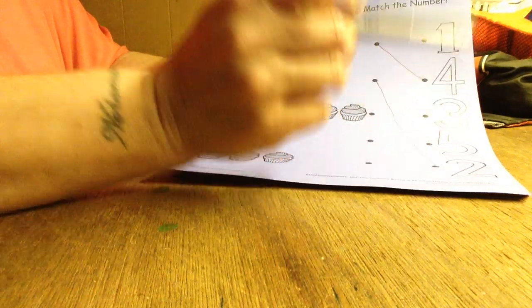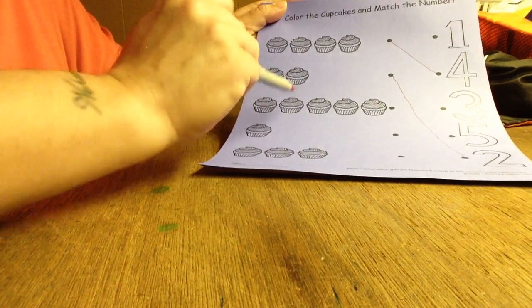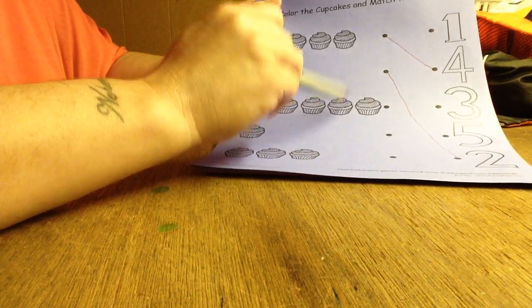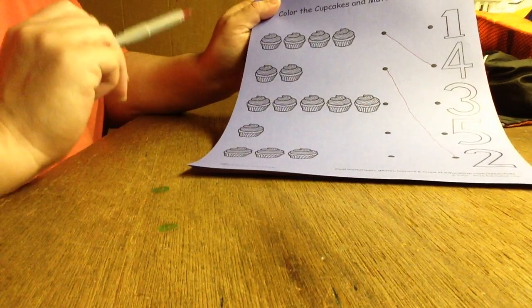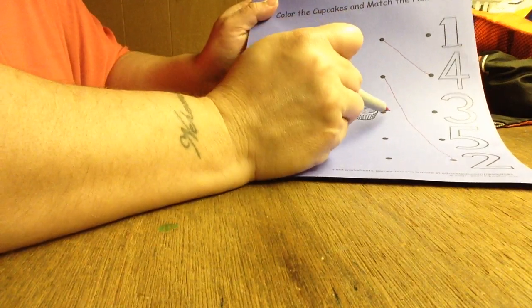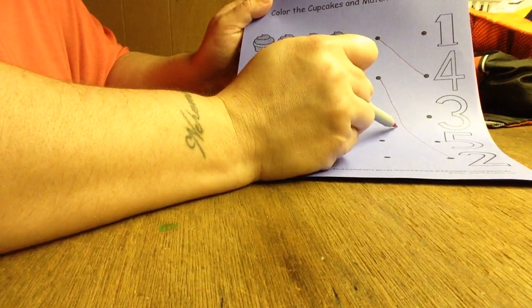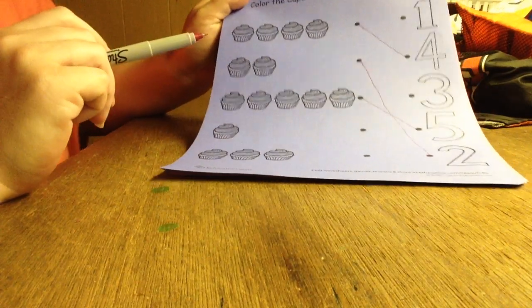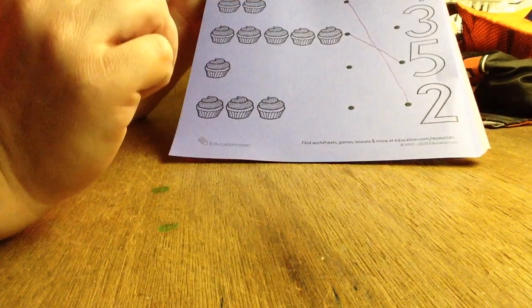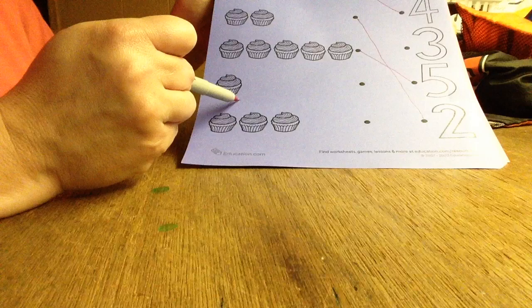So let's take our line and go to the number five. Very good, you guys. Our next one is just one cupcake, so we're going to go to our little dot and we're going to trace our line all the way up.